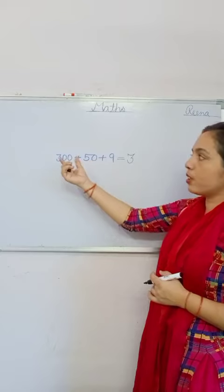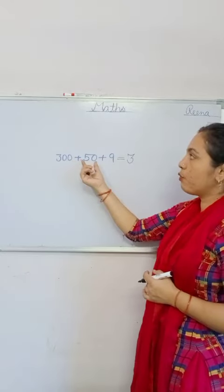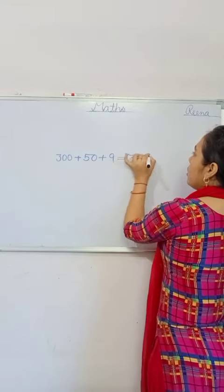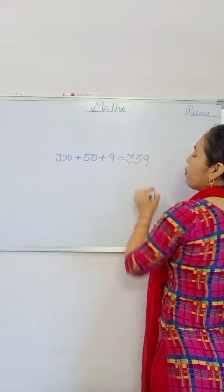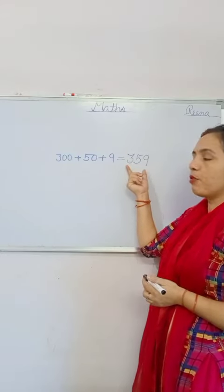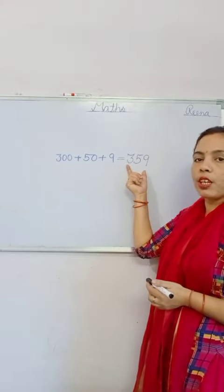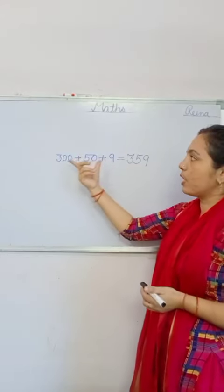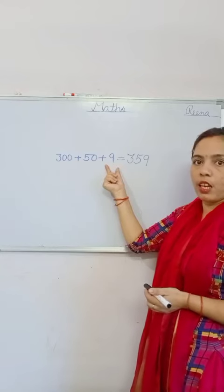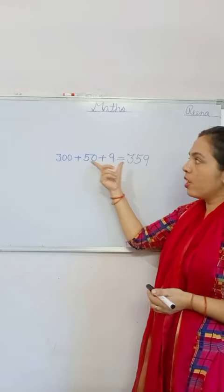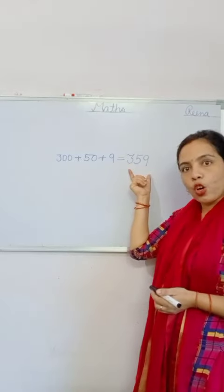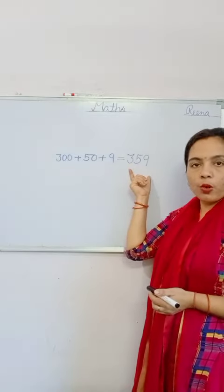How do you read your number? 359. Now, 359 is our number and the expanded form of 359 is 300 plus 50 plus 9. This is the expanded form and this is the short form.